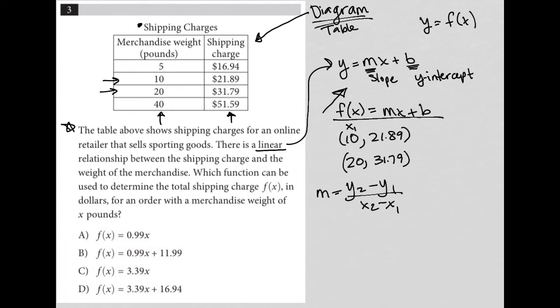this is the first X term that I'm using. This is the first Y term I'm using. And then the same for here, second X term and second Y term. So I'm going to just fill that in. So 31.79 minus 21.89 over 20 minus 10. So the denominator is just going to be 10.